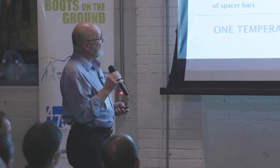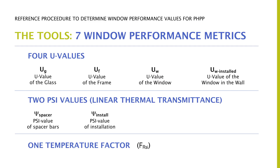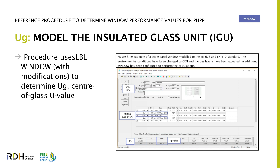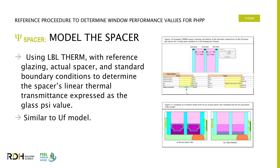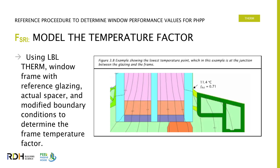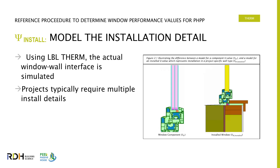Talking about the tools: the procedure allows you to calculate U-G, U-F, U-W, U-W installed, the psi values, the spacer value, the install value, and the FRSI for any fenestration product. We use the Window program with modifications to calculate your center-of-glass U-value. We use the Therm program with modifications to determine U-F, the spacer linear transmittance psi value, and the FRSI temperature factor. And using LBL Therm, the actual window-wall interface is simulated as well.